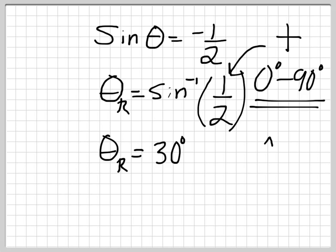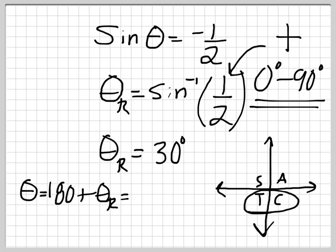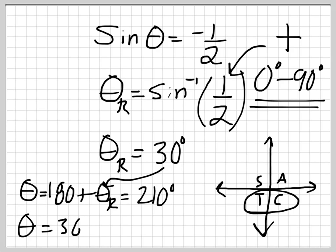Then I can use the CAST rule. The CAST rule — C-A-S-T — tells me where sine is negative. Sine is negative in the third and fourth quadrants. In the third quadrant, theta equals 180 plus theta r, which gives 180 plus 30 equals 210. In the fourth quadrant, theta equals 360 minus theta r, which gives 330. So I've solved those without the unit circle, and confirmed that sine equals negative 1/2 in those two quadrants.